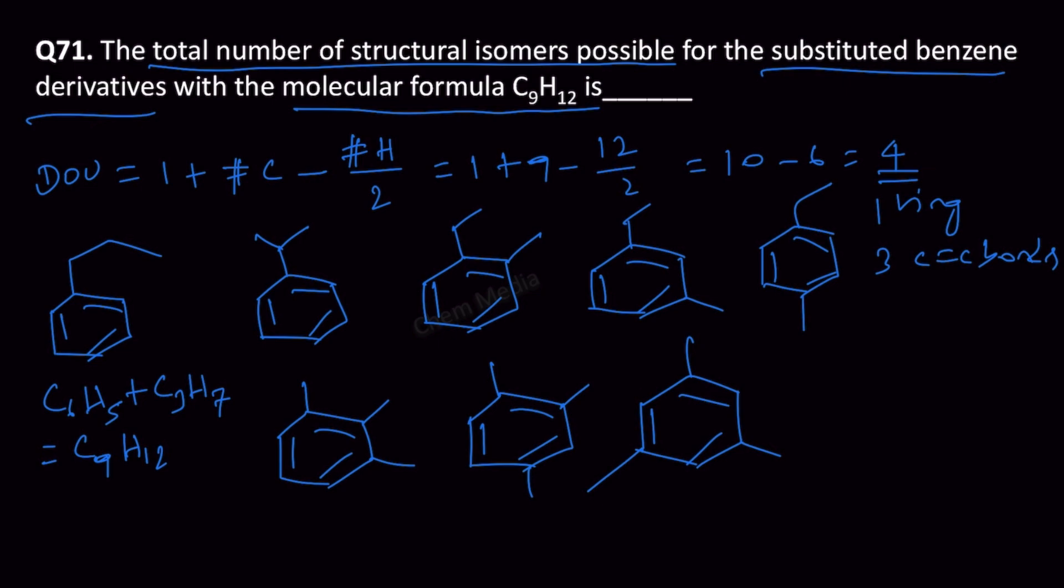We are exhausted with all the options. Any other combinations we put, it would become a repetition. And therefore, we got 8 isomers.